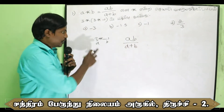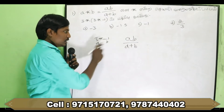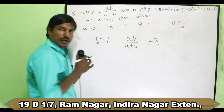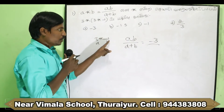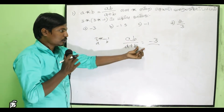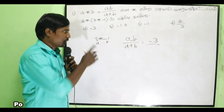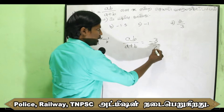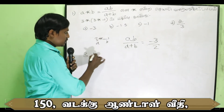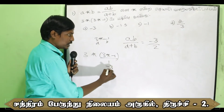Now a is 3 and b is minus 1. So a times b equals 3 into minus 1, which equals minus 3. And a plus b equals 3 plus minus 1, which equals 2.